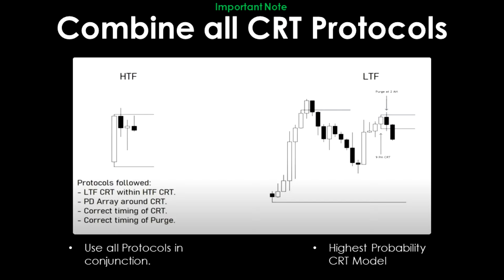In this example, we can see that on the higher timeframe we have one CRT, and on the lower timeframe we have another. The protocols being followed include a lower timeframe CRT within a higher timeframe CRT. There is a PDRA around the CRT on the lower timeframe, taking the form of an order block. Additionally, the timing of the CRT is correct — the CRT formed at the right time. The purge of that CRT also happened at the right time, which is why the lower timeframe CRT was high probability.